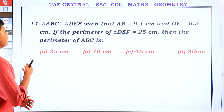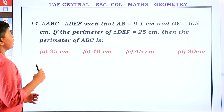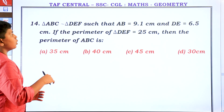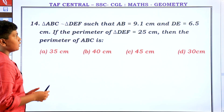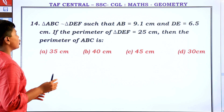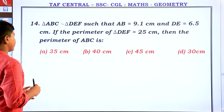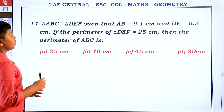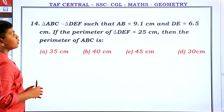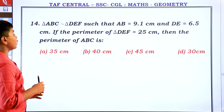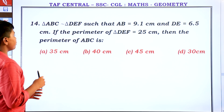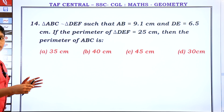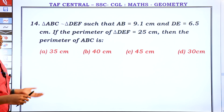Triangle ABC is similar to Triangle DEF, such that AB equals 9.1 cm and DE equals 6.5 cm. If the perimeter of Triangle DEF equals 25 cm, then what is the perimeter of Triangle ABC?